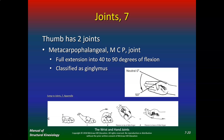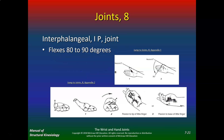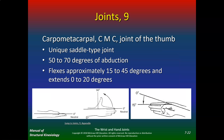The thumb has two joints. The metacarpophalangeal joint goes from full extension to 40–90 degrees of flexion, classified as ginglymus. The opposable thumb is what distinguishes us from other primates — and if you lose your thumb, you lose about 40% of hand function.